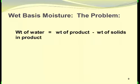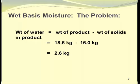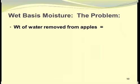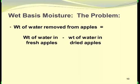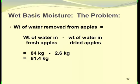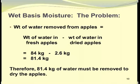The weight of water in the dried product will be the weight of the product minus the weight of the solids: 18.6 kilograms minus 16.0 kilograms, giving 2.6 kilograms of water in the final product. So the weight of water removed from the apples is 84 kilograms minus 2.6 kilograms, or 81.4 kilograms. Therefore, 81.4 kilograms of water must be removed to dry the apples.